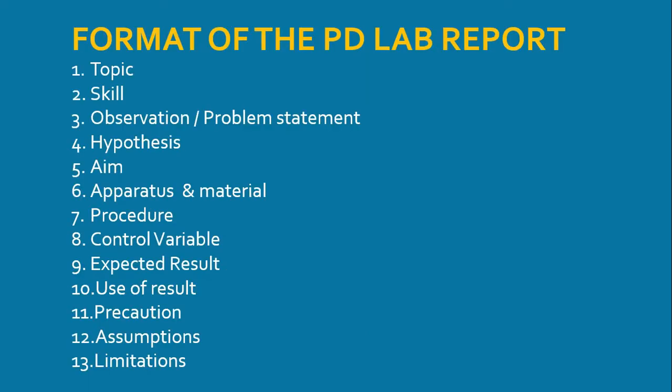The format of a planning and design lab is as follows. First, in your book you're going to write what topic the lab is around, then the skill — here it will be PD, or planning and design. Then you write your observation or problem statement, which is sometimes given by the teacher and sometimes one you come up with yourself. Then the hypothesis, which is that intelligent educated guess. The aim states what it is you intend to find out as a result of that hypothesis. Then apparatus and materials — what you're going to be using to carry out the lab. Then the procedure, which is written in future tense, describing what you are going to do in execution.